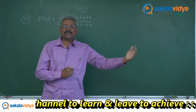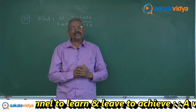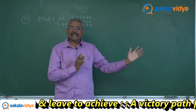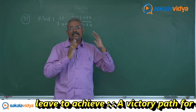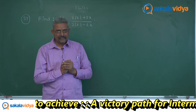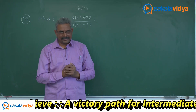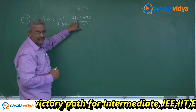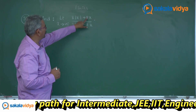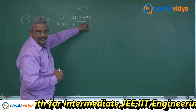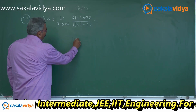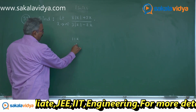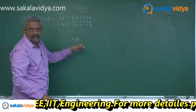As x approaches positive infinity, x is absolutely greater than 0. Since x > 0, we can easily define mod x, whose value equals x. So here mod x is replaced by x: 8x + 3x = 11x in the numerator. In the denominator, 3x − 2x = x, so x cancels and the value is 11.